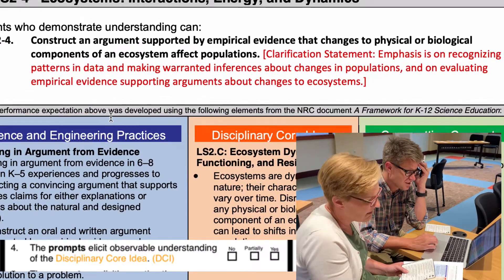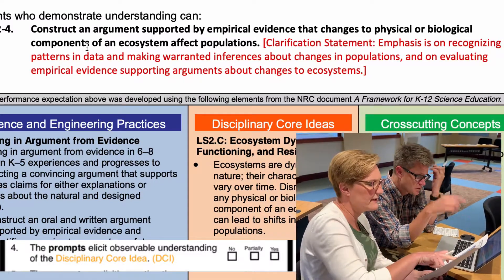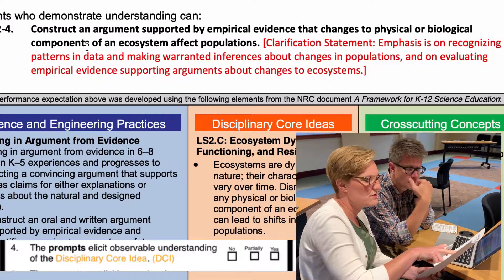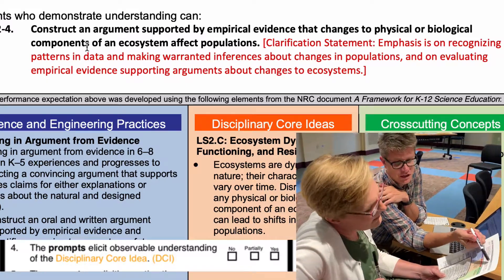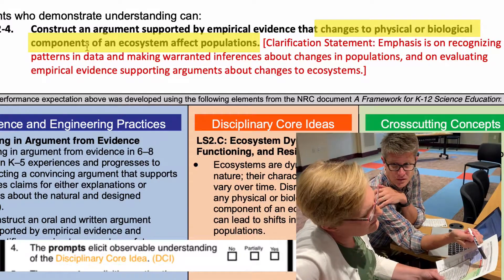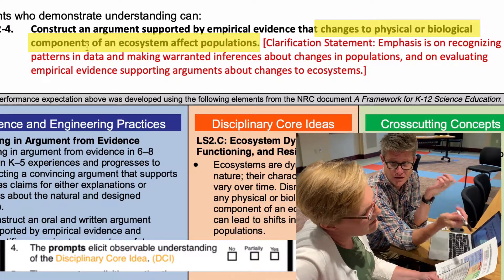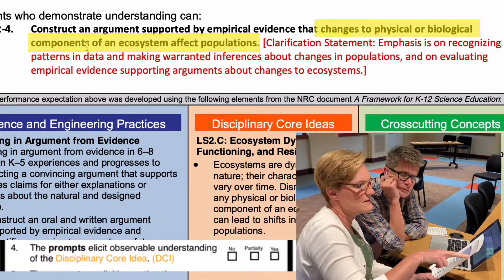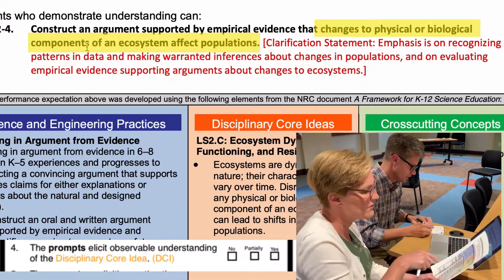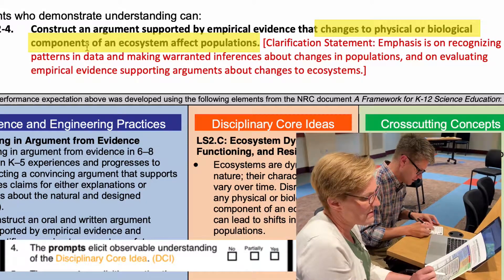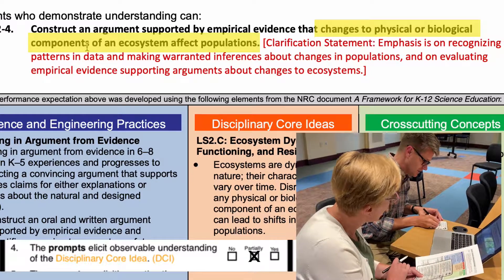Does it get to the DCI? Yes — which is that ecosystems are dynamic. Disruption to any physical or biological component can lead to a shift in populations. The stink bug being introduced is a biological change entering the ecosystem. I think it's an okay one, but we need evidence on other components of the ecosystem. I would say partially. We need evidence on other components.